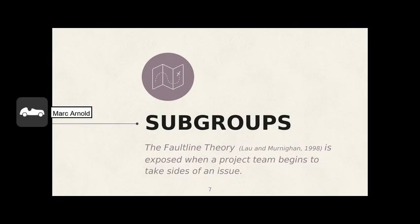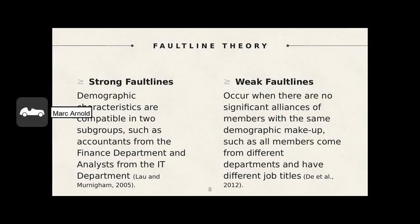Now let's touch on the subject of subgroups. The fault line theory is exposed when a project team begins to take sides of an issue. Fault lines within groups could remain dormant until the subgroup begins to form alliances that do not see eye to eye. It becomes a 'we said and they said' conflict which could lead to obstructing project goals.